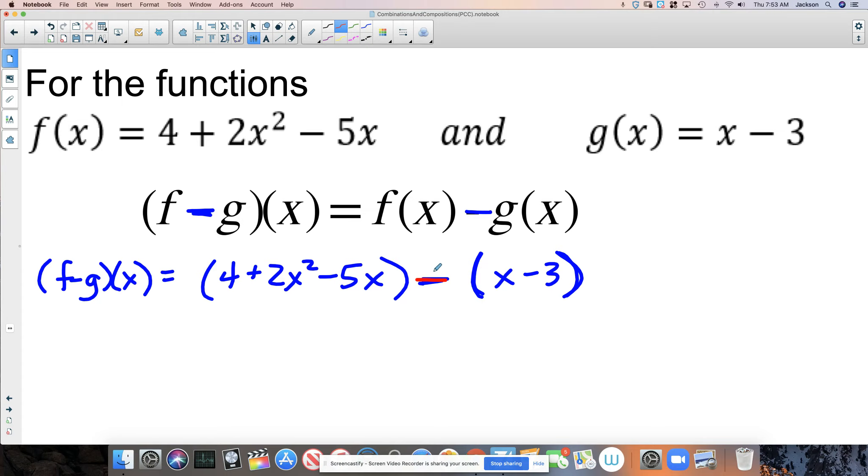So really, we're distributing this negative sign, if you will, to the x, and we're distributing this negative sign to the negative 3. So when I go to start simplifying this, I have nothing here that I need to distribute. I have no exponent. I have nothing from the back that I'm going to distribute. So the parentheses here kind of just fall away. But over here, we have minus x and a minus negative 3.